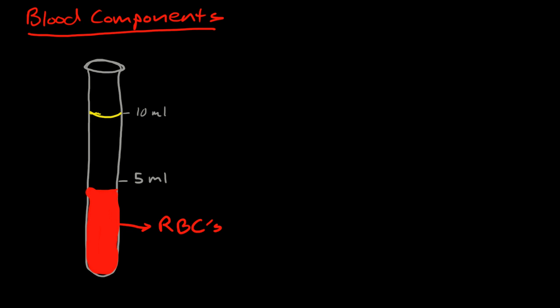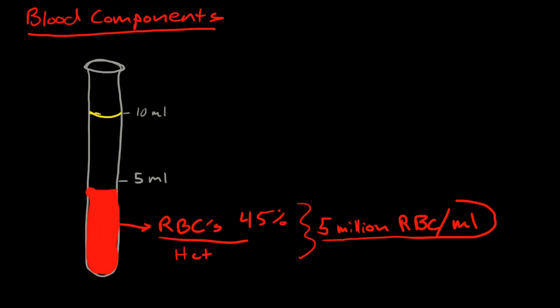This is equivalent to hematocrit. The crit here would be 45%, so the blood is made up of about 45% red blood cells. For a healthy person, that makes about 5 million red blood cells per ml in the body.